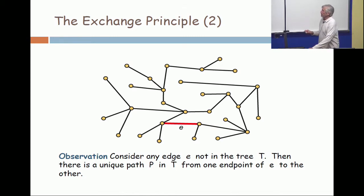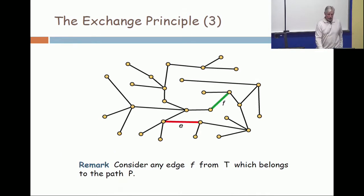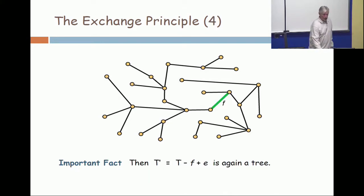Now, take any edge on that cycle. I pick one, call it F. It's any edge on that cycle. Now, throw E away and put in F. What do I have? A spanning tree.